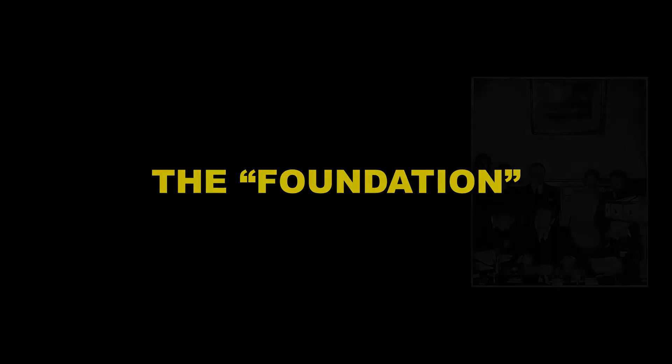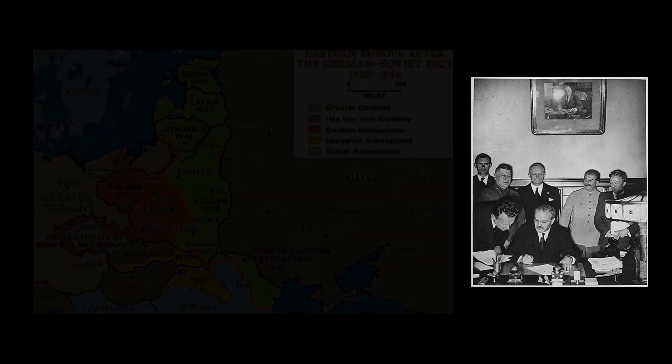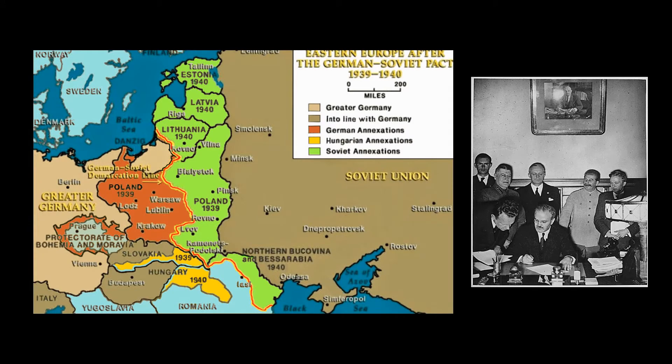Although not officially recognized until May 14, 1955, the foundation of what would later become known as the Warsaw Pact occurred early in World War II. In 1939, the USSR entered into an agreement with Nazi Germany that contained a secret protocol that divided Romania, Poland, Latvia, Lithuania, Estonia, and Finland into German and Soviet spheres of influence. Eastern Poland, Latvia, Estonia, Finland, and Bessarabia in Northern Romania were recognized as parts of the Soviet sphere of influence. Lithuania was added in a second secret protocol in September of 1939.